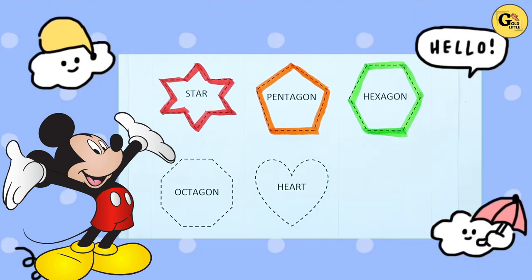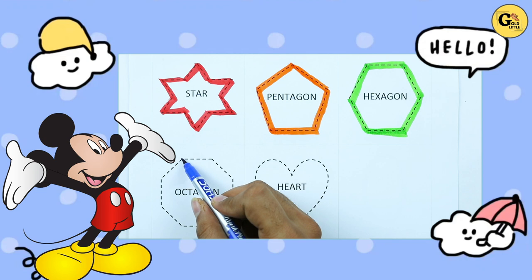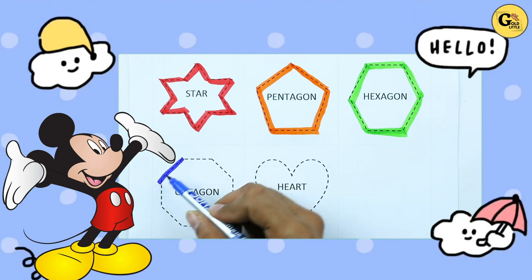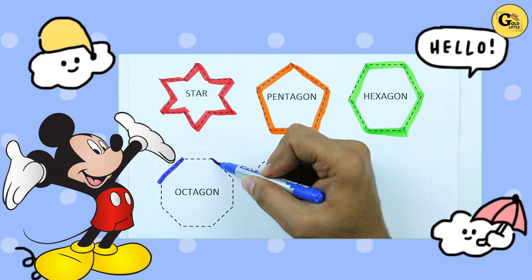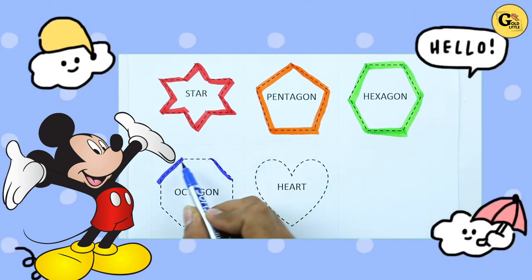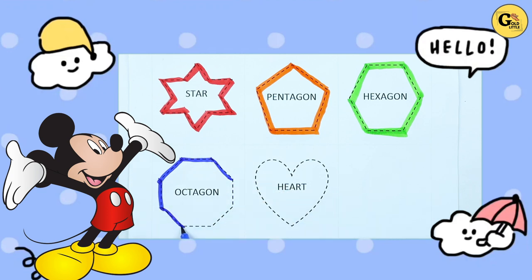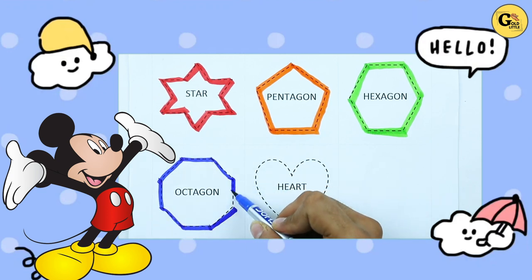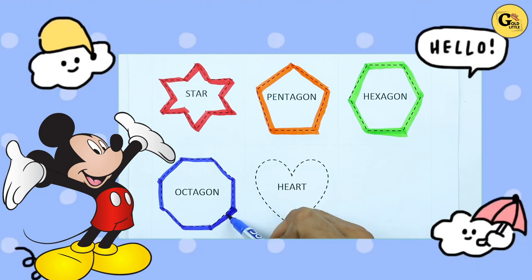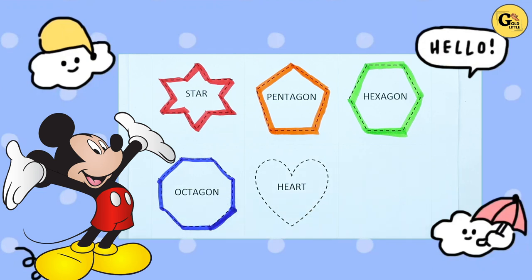Octagon. One line, two line, three line, four, five, six, seven, eight. Eight lines means octagon.